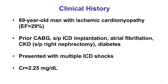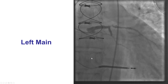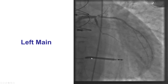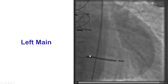The patient had ischemic cardiomyopathy, ejection fraction of 29%, had previous bypass, had ICD implantation, AFib, chronic kidney disease with a creatinine of 2.25 which was his baseline, and he came in with multiple ICD shocks. As a result, he was referred for coronary angiography.